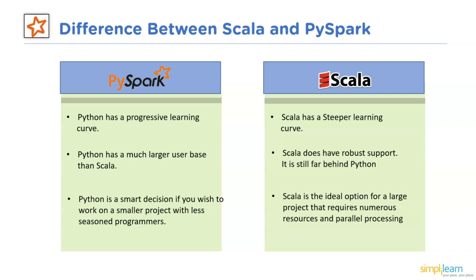Regarding community support, Python has a much larger user base than Scala, which helps it gain support. As a result, Python benefits from more comprehensive libraries devoted to various task complexity. Scala does have robust support, but it is still far behind Python. Finally, when considering project scale, Python is a smart decision if you wish to work on a smaller project with less seasoned programmers. However, Scala is the ideal option for a large project that requires numerous resources and parallel processing.